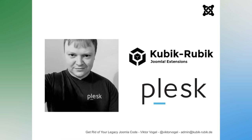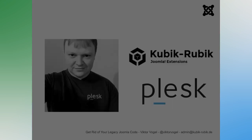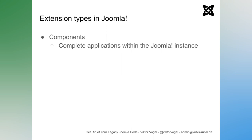So let's start with the basics of extension development. If you want to write extensions, you should at least know what different types we have in Joomla — I think that's the first step. First of all, as most of you know, there are components — complete applications. Within the Joomla instance, they have an admin interface, routing, templates. They use the MVC pattern — model, view, controller. The output is done via views in the main area of the template where the component is loaded.